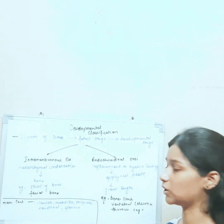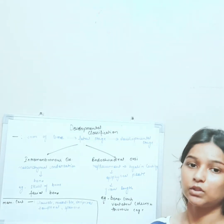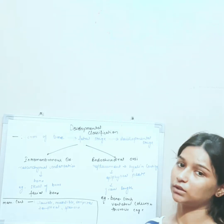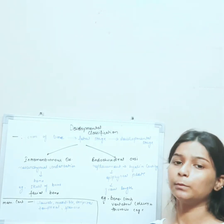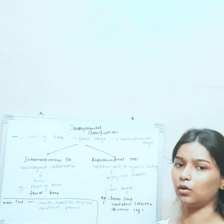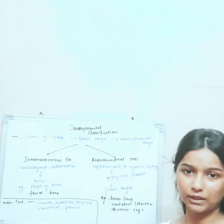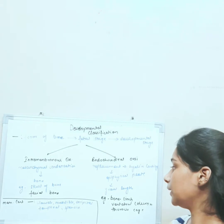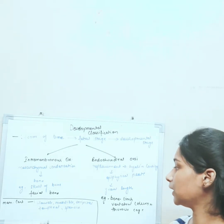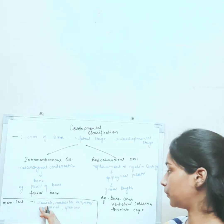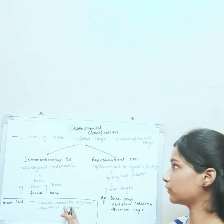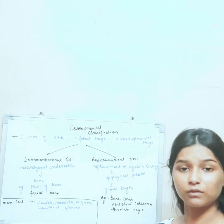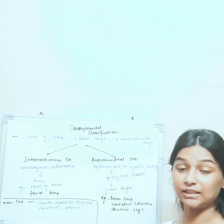Now moving to the third category: membrano-cartilaginous ossification, in which there is partly ossification of the membrane and partly ossification of the cartilage. Examples include the clavicle, mandible, occipital, temporal, and sphenoid bones.